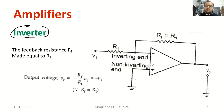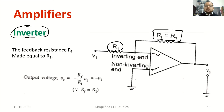You know, the op-amp has two inputs — one is the non-inverting terminal and another one is called the inverting terminal. You need to connect one input resistance at the inverting terminal, and there should be a feedback resistance connected to the output. That is why it is called a feedback resistor — Rf.